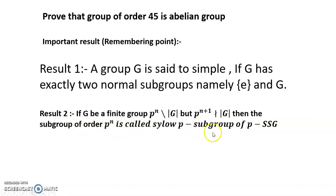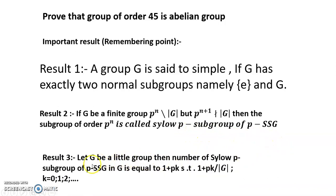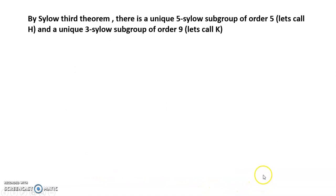Result 3 - Let G be a finite group, then number of Sylow p-subgroups in G equals 1 + pk such that 1 + pk divides |G| and k = 0, 1, 2, ... By Sylow third theorem.